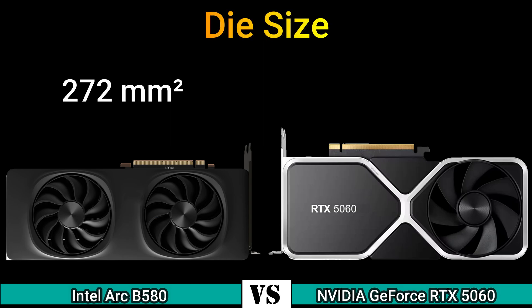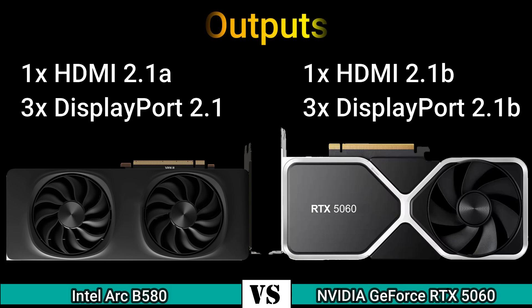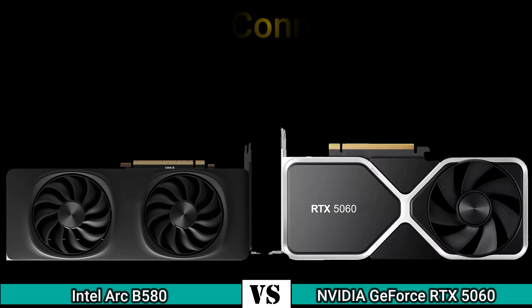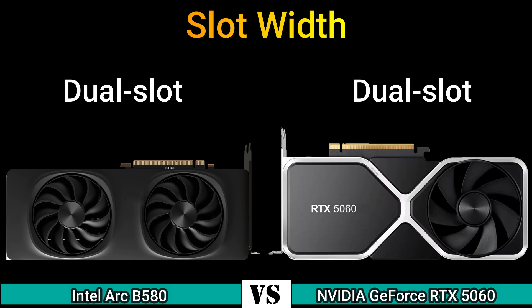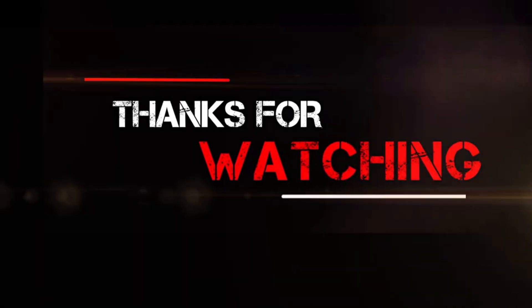Die size output: 1x HDMI 2.1a, 3x DisplayPort 2.1 and 1x HDMI 2.1b, 3x DisplayPort 2.1b. Power connector: 1x 8-pin and 1x 16-pin. Slot: dual slot. Thanks for watching.